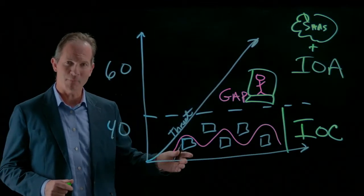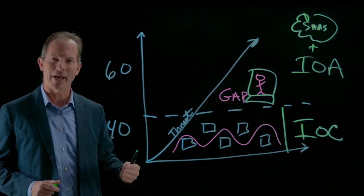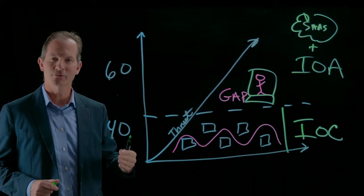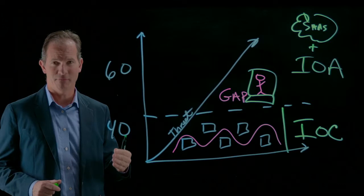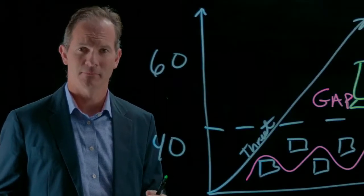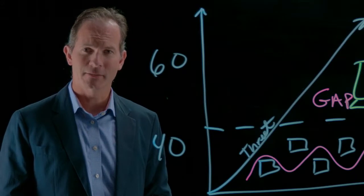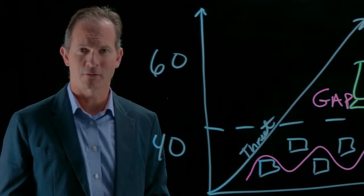Unlike Indicators of Compromise, IOC, IOA is Indicator of Attack. CrowdStrike solutions have the ability to have real-time visibility of all of the events and actions happening on the machine itself in real-time. So with an Indicator of Attack capability, we're looking for the behavior and the anomalies occurring on those machines.